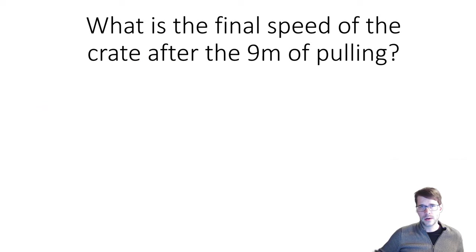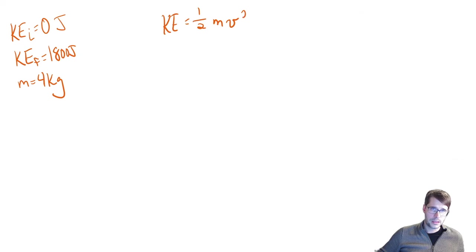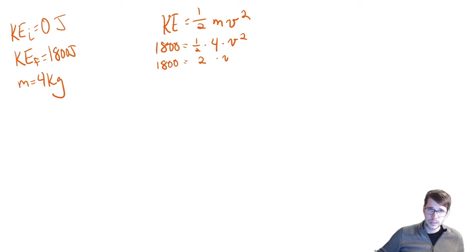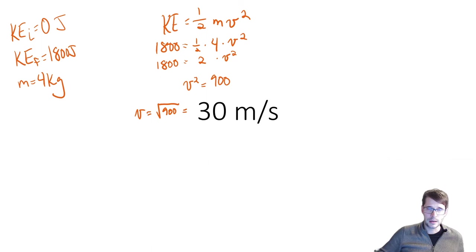What's the final speed of the crate after 9 meters of pulling? We just found the change in kinetic energy, and the problem said it started at rest — so initial energy was 0 joules, final energy was 1,800 joules, and mass is 4 kilograms. Using KE equals one-half mv-squared: plugging in, we get 1,800 equals one-half times 4 times v-squared. Multiplying one-half times 4 gives 2; dividing both sides by 2 gives v-squared equals 900. So v equals the square root of 900, which is 30 meters per second.